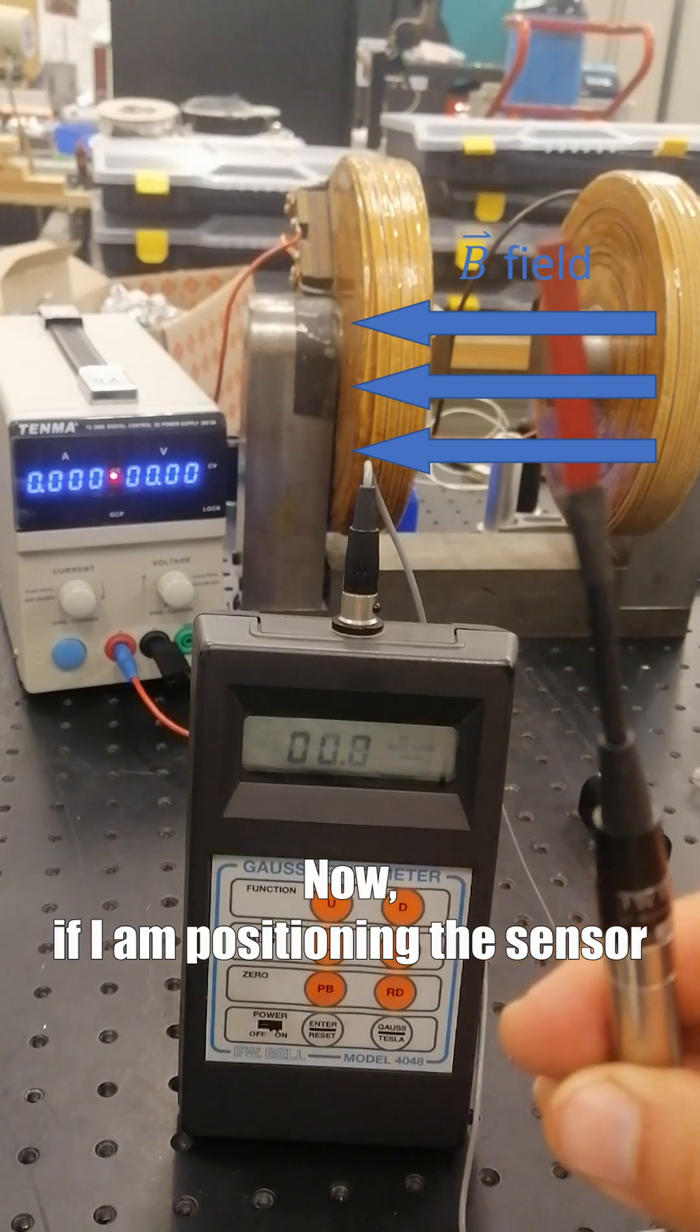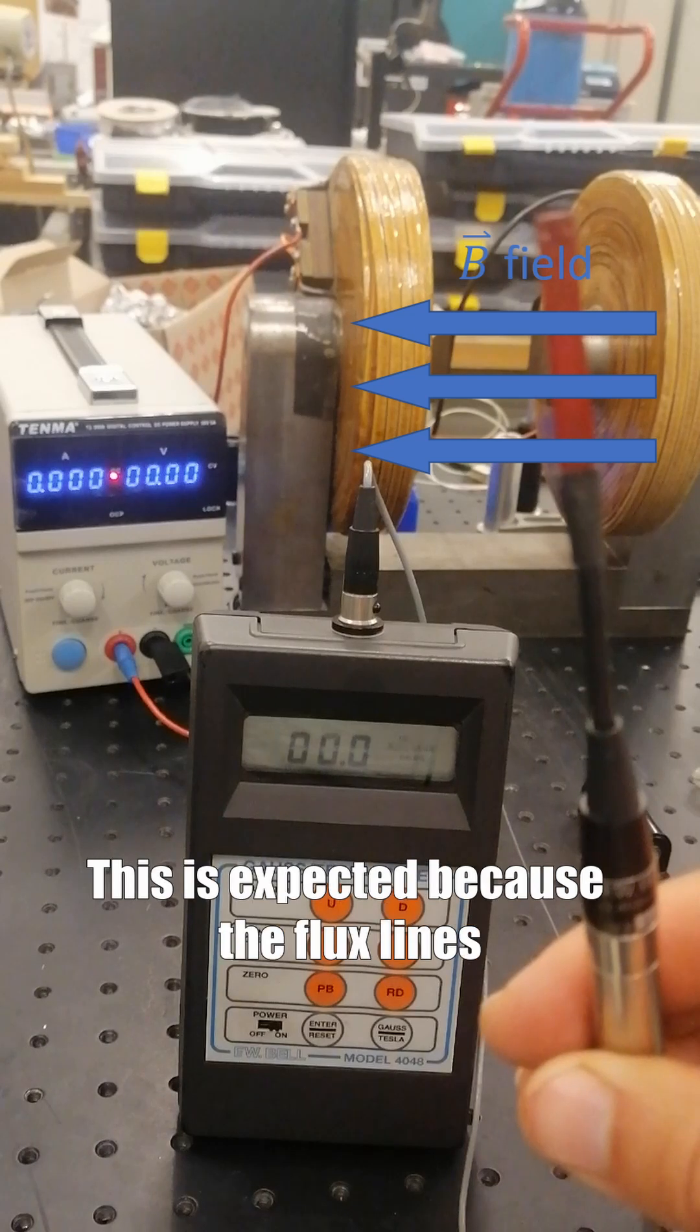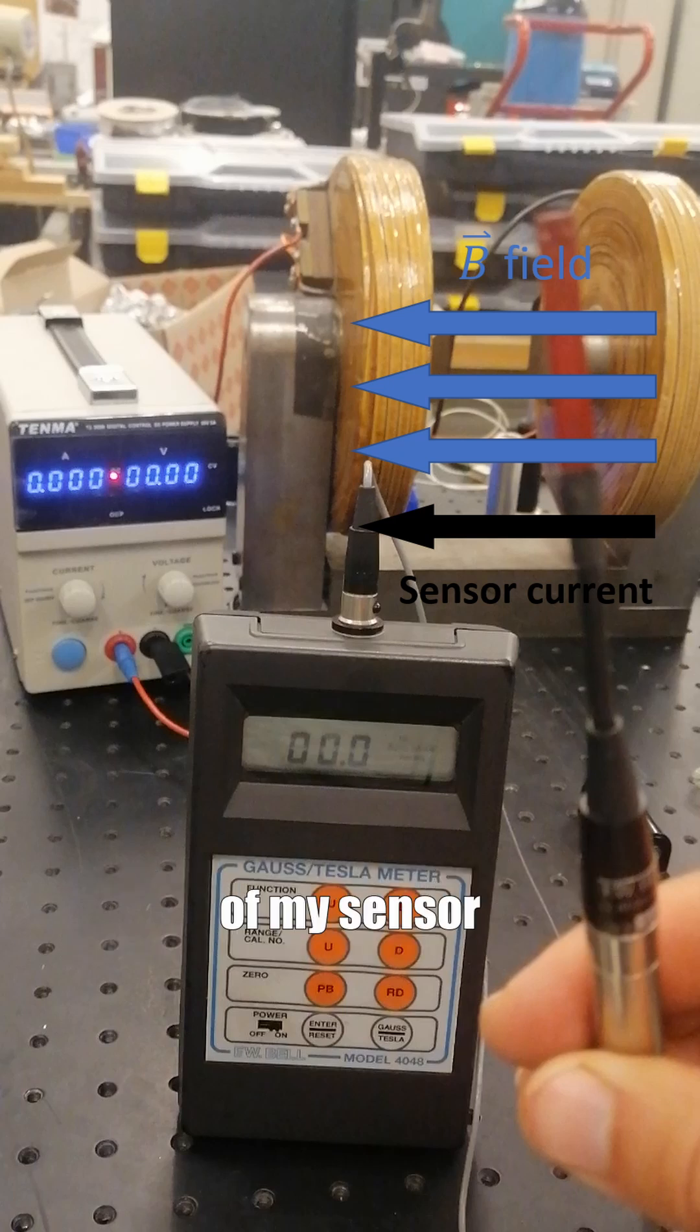Now, if I'm positioning the sensor toward east, the value is decreasing to zero. This is expected because the flux lines are now parallel and they are not affecting the current of my sensor.